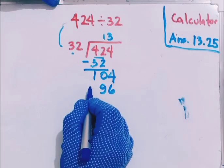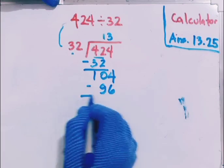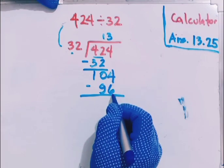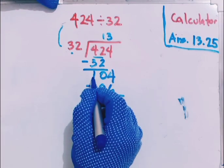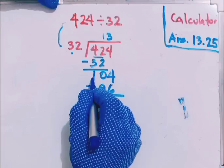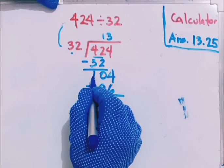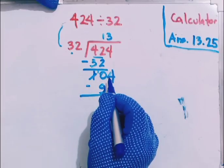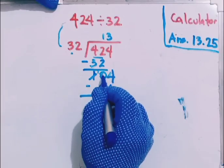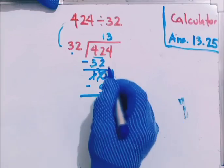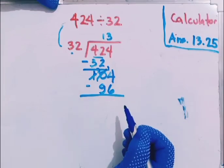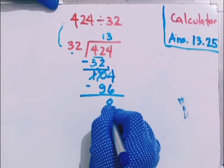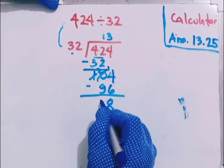Now again we have to subtract. 4 minus 6, can it be? No, so we have to borrow from 1, we have to borrow from 0. Therefore, 0 to borrow here will become 10 and this will cancel out. If we go back, this becomes 9, therefore this becomes 14. 14 minus 6 is 8, 9 minus 9 is 0.